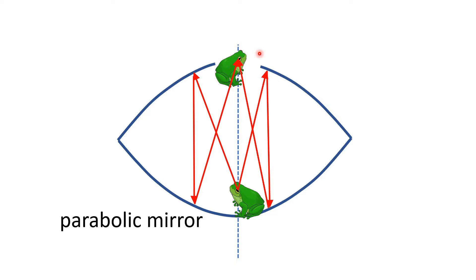Which is the same size, but it's reversed with respect to left to right. It's a real image. It's from the rays, not from their extension, but from the rays interaction. So it's a real image and what we see is a real image of the frog that is sitting at the bottom of the two parabolic mirrors.